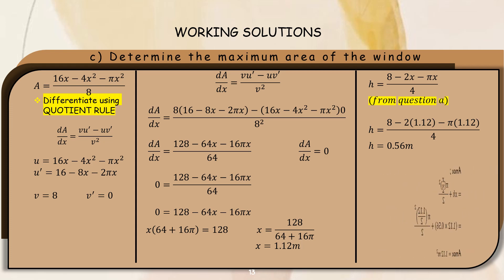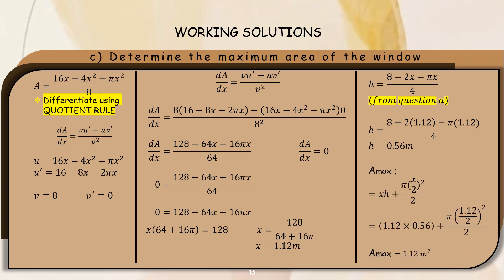To find the maximum area of the window, we use the equation xh + pi multiplied by (x over 2) squared divided by 2. Substituting the maximum values of x and h, we get the maximum area of the window, which is 1.12 square meters.